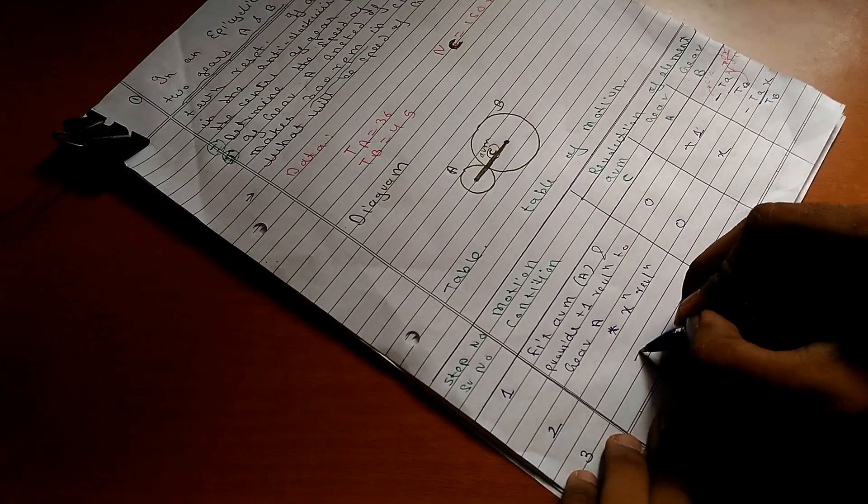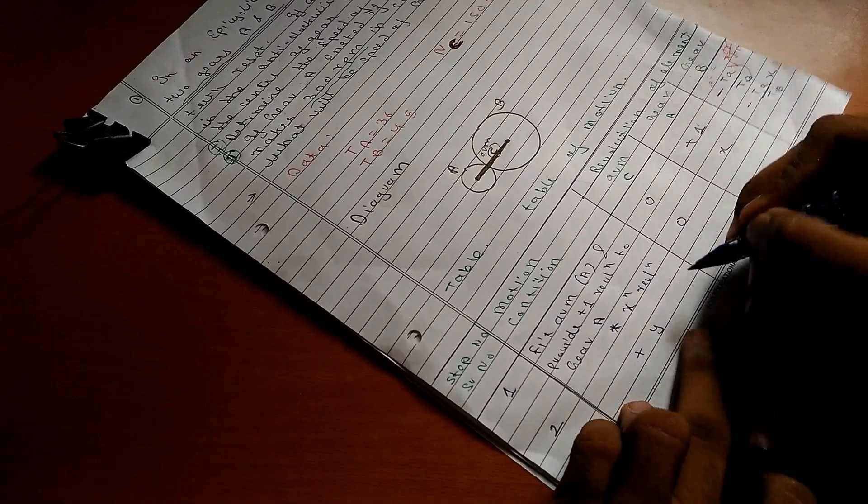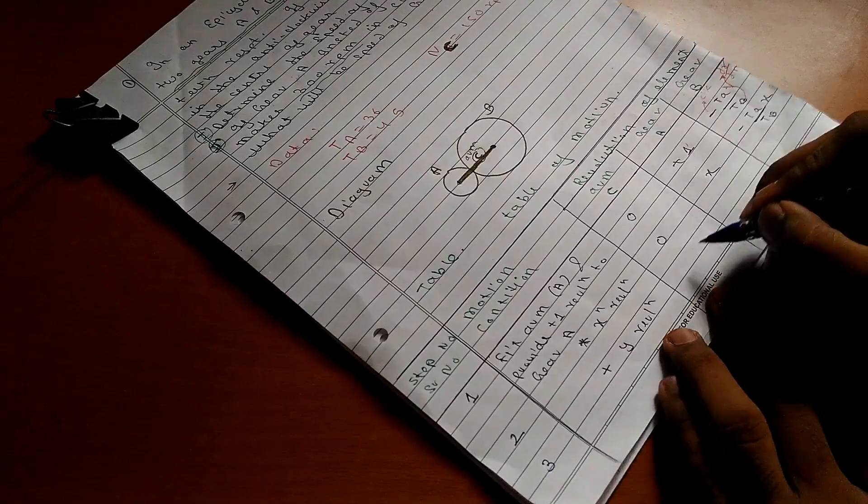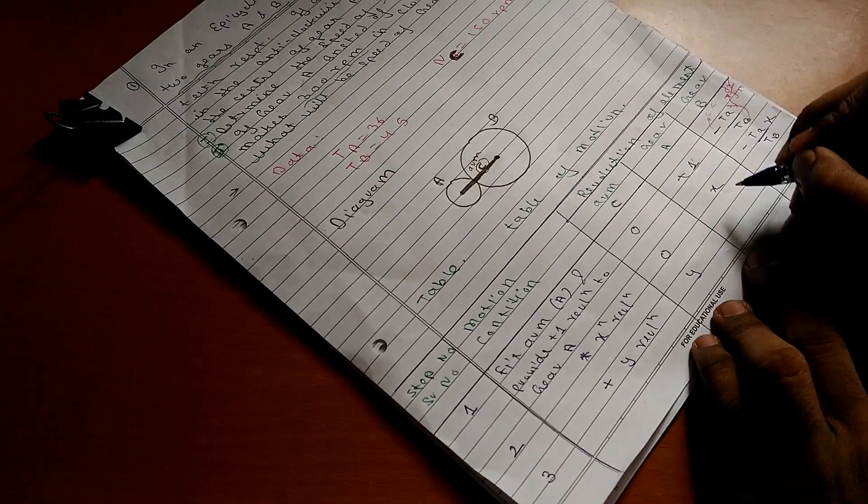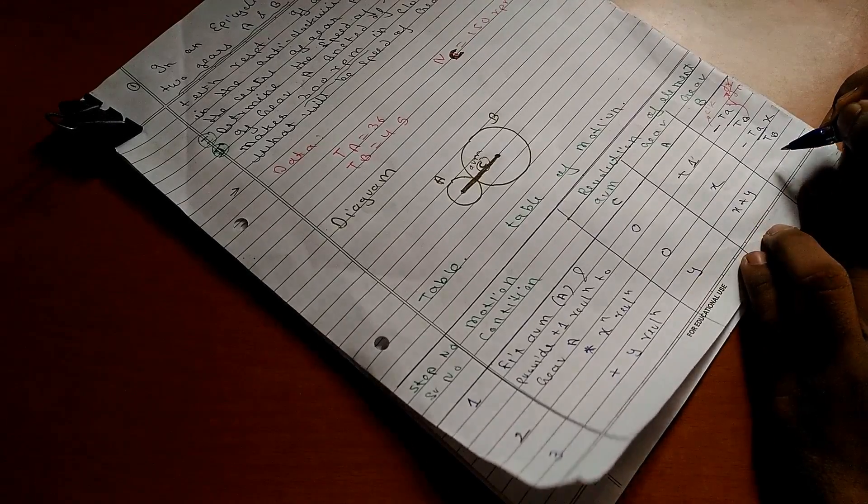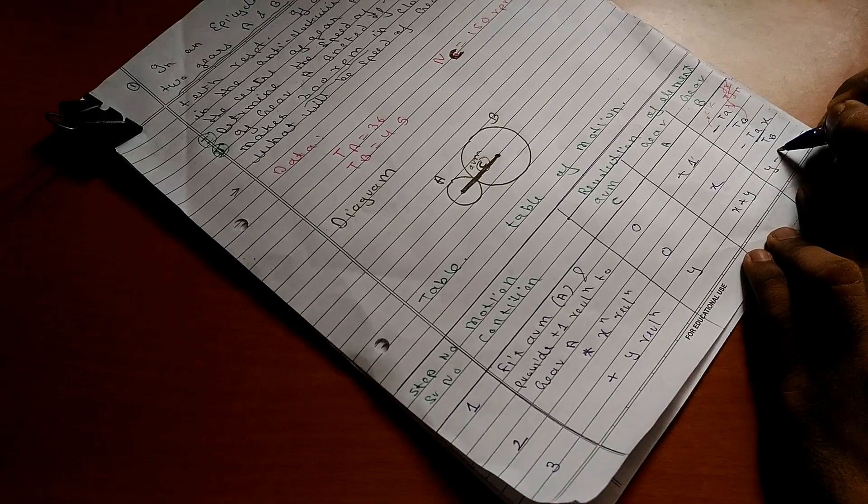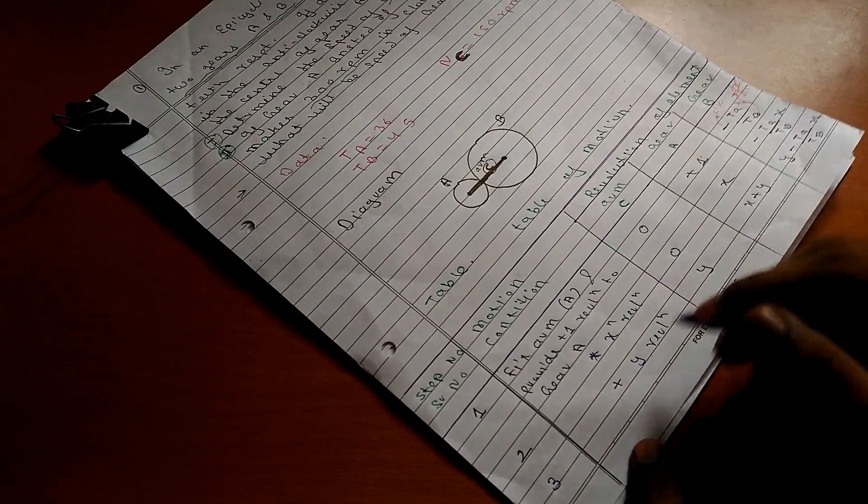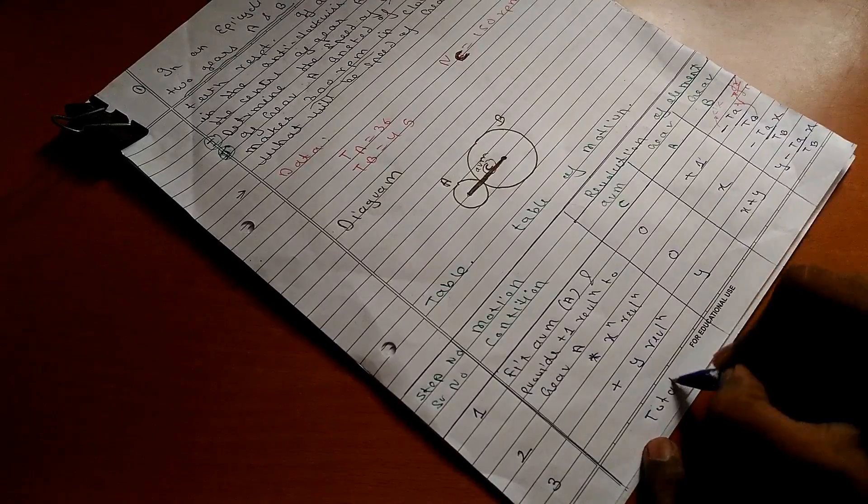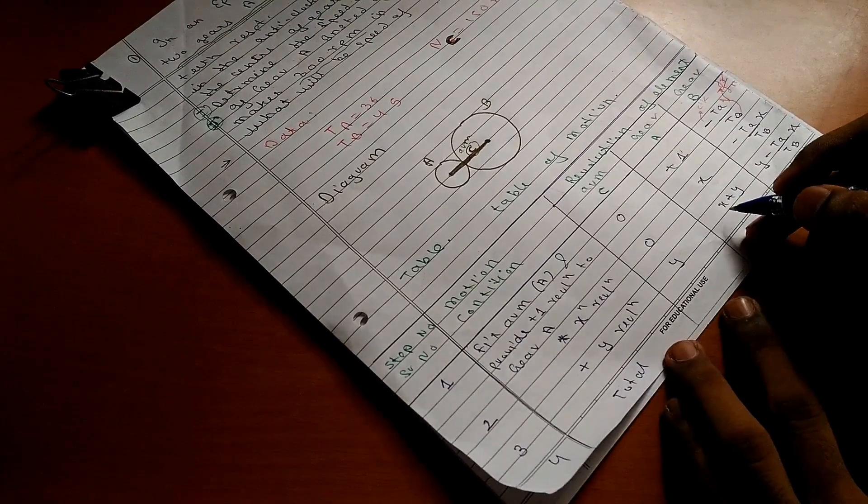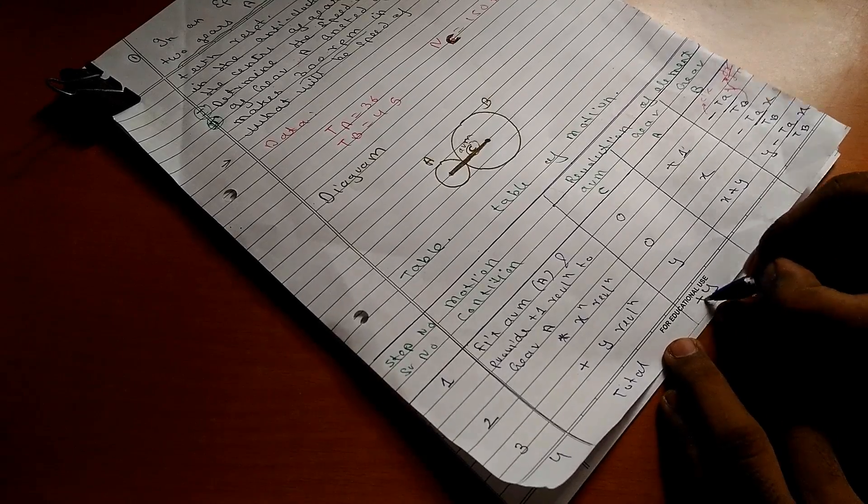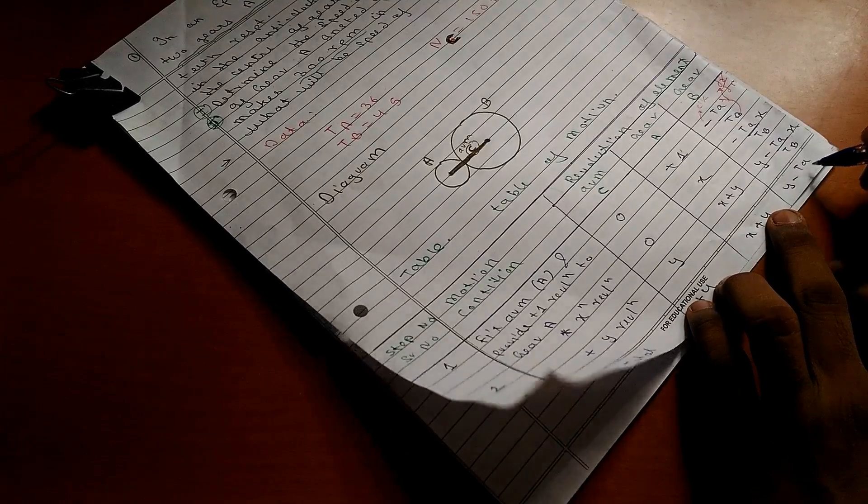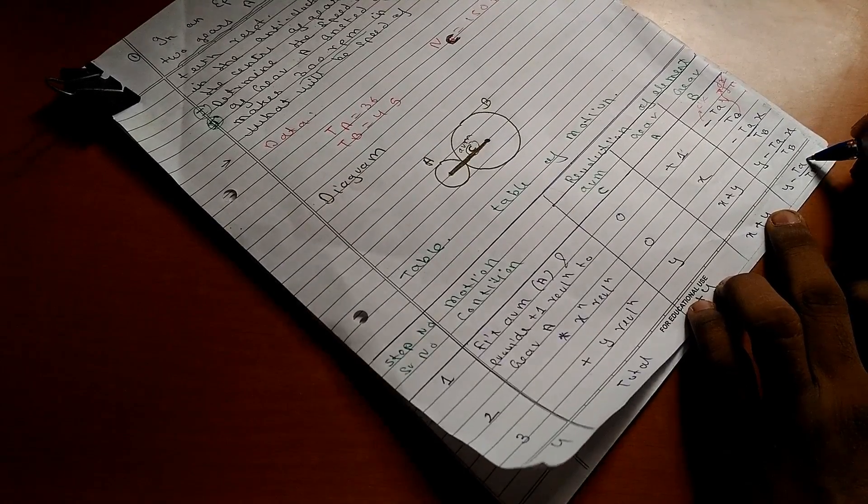And the third step says that: just adding y revolution. Here it becomes x plus y, and y minus teeth of A to teeth of B into x revolution. The final step, that is total, the fourth one, writing as: y, x plus y, y minus teeth of A to teeth of B into x.